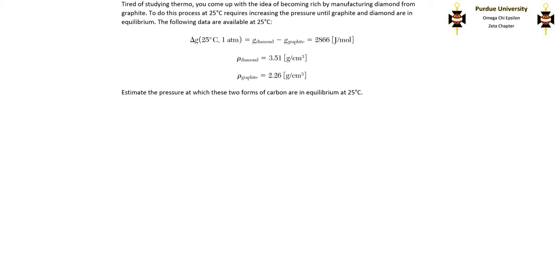They give us some data at 25 degrees Celsius: the change in molar Gibbs free energy between diamond and graphite, and the density of both diamond and graphite. The problem asks us to estimate the pressure at which these two forms of carbon are in equilibrium at 25 degrees Celsius.